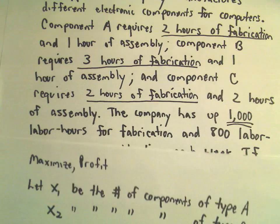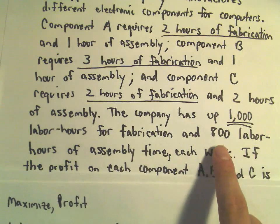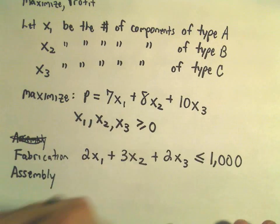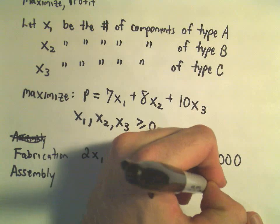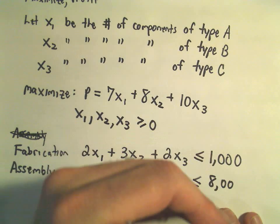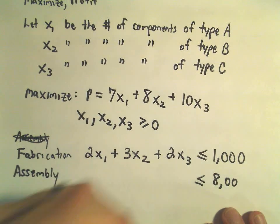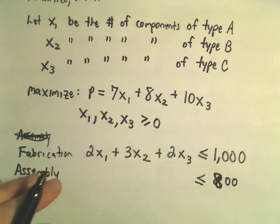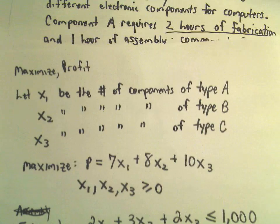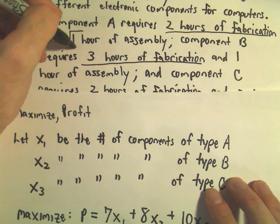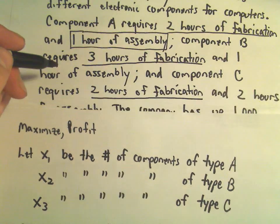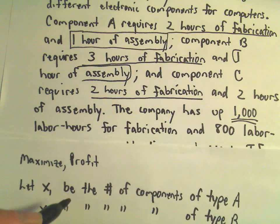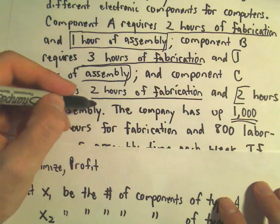Now for assembly time, we're going to do the same thing. We have 800 hours at most, so we'll have less than or equal to 800 on the right side. Component A takes 1 hour of assembly, component B also takes 1 hour of assembly, and component C takes 2 hours of assembly.